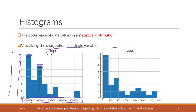We also have an outlier around four hundred thousand. On a second chart, we can see most data are in one range, with a few records in another range. A histogram is a great choice when we want to see the statistical distribution of a single variable.